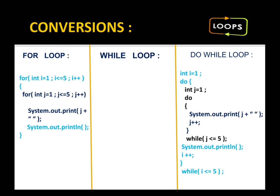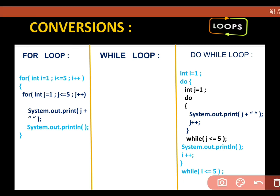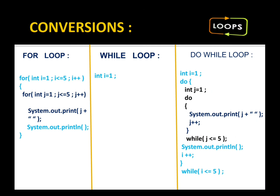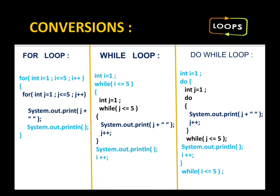Converting do-while to while is the easiest because the syntax is similar. We place 'do' in place of 'while' and pick the while condition and place it at the top. In place of 'do' I am writing 'while' — everything is placed in the same position except the 'do' and 'while' keywords swap positions.